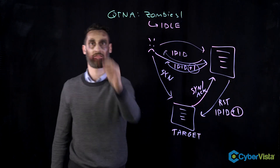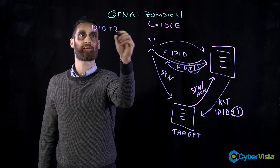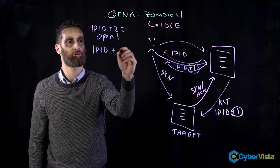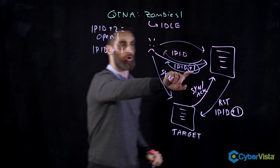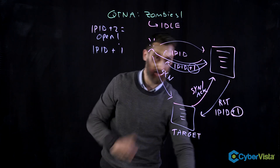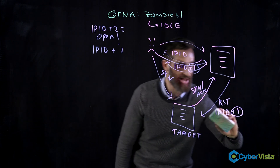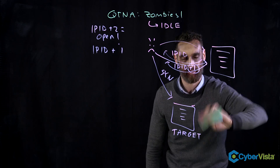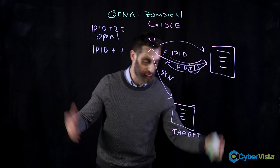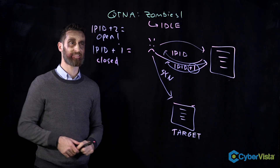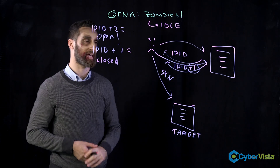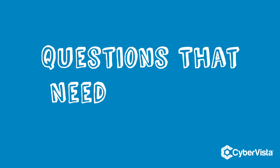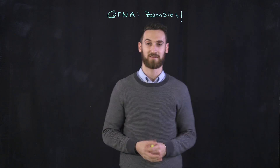So the magic is this: if the IP ID increased by one when the zombie sent the RST, and by one again when we polled it, the IP ID has increased by two total — that means an open port. By contrast, if the IP ID only increased by one, that means the RST step never happened, because the target never sent the SYN-ACK back — therefore the port is closed. This is the idle scan, also called an IP ID scan, and the whole idea is identifying open or closed ports.